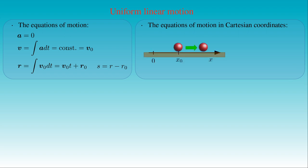We choose the surface on which the body moves as the frame of reference and attach the coordinate system to it. Then we align the x-axis with the direction of motion and describe the position of the body with the coordinate x. The initial position of the body is x0 at time t equal to zero. Then the vector equations of motion reduce to scalar equations for the x component. The acceleration component ax is zero; the x component vx of velocity equals the constant v0; and the x component of position is v0 times t plus x0, meaning the body travels along the x-axis from the initial point x0.